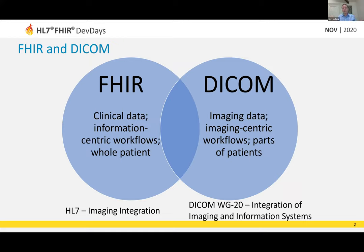Why not just take all of DICOM and stuff it into FHIR? FHIR can hold images — why not make FHIR the sole repository? Well, DICOM is an extremely established standard. A DICOM image created in 1993 can likely be opened in pretty much any viewer today. There's an estimated 4.5 exabytes of data in images, 450 to 500 petabytes created every year, growing at a phenomenal rate — estimates range from 25% year-over-year to 100% every five years. So we need to keep DICOM separate.